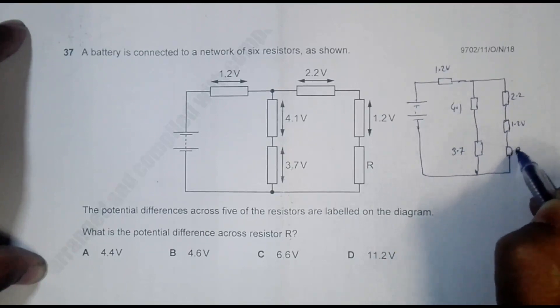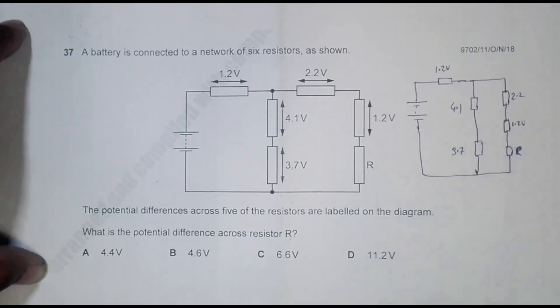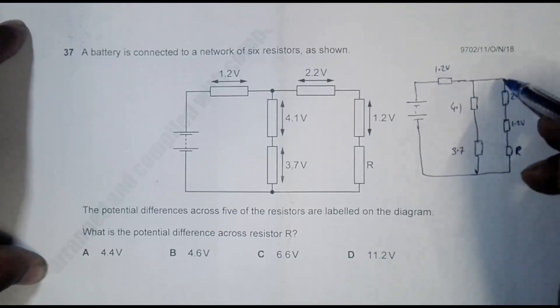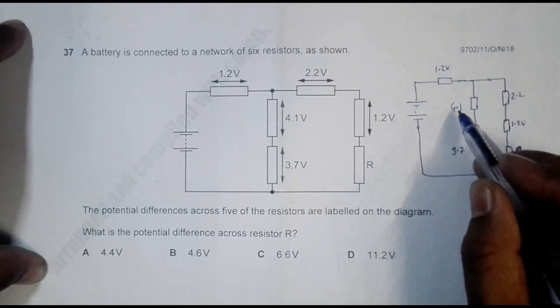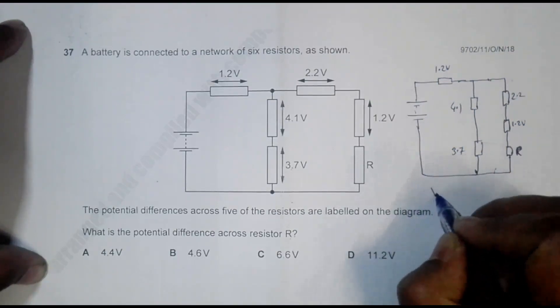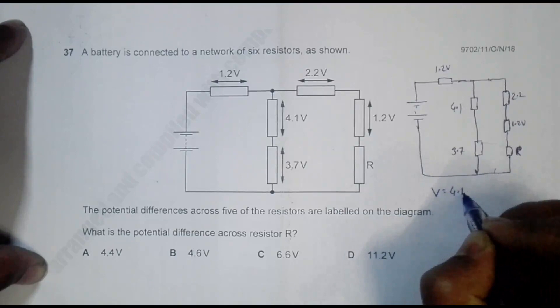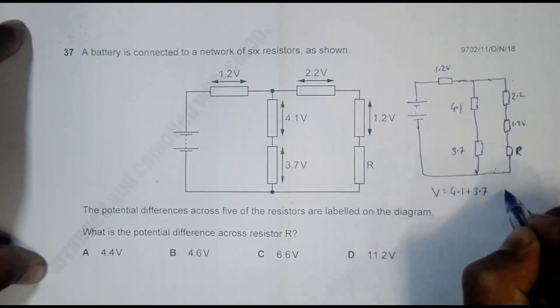The resistance R is given, so the PD here should be same for both branches. So here the PD totally is equal to 4.1 plus 3.7, and that's equal to 7.8 volt.